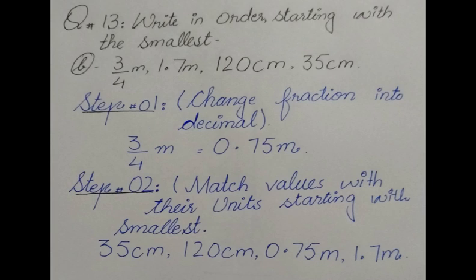The first value is also in decimal. How? We will divide it. 3 divided by 4 and the answer will be 0.75. Now we have two values in meters.